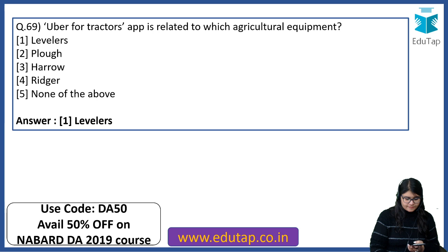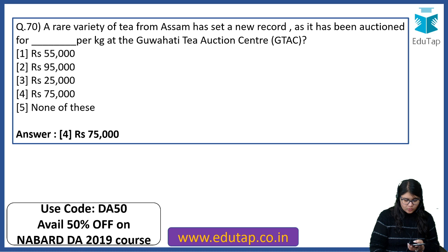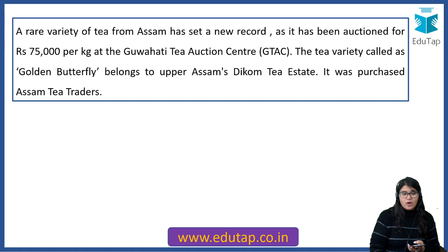A rare variety of tea from Assam has set a new record as it was auctioned at the Guwahati Tea Auction Centre. The name is Golden Butterfly — how much was it sold for? The answer is Rs. 75,000. It belongs to Assam's Dikomtee Estate and was sold at Rs. 75,000 per kg — again a probable question.